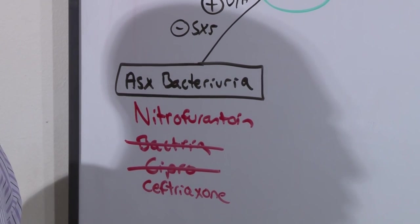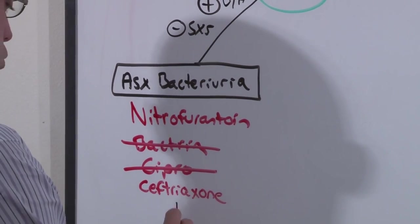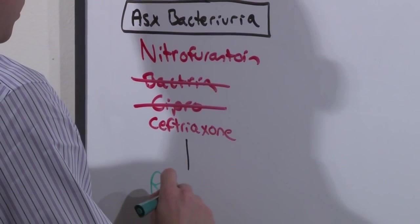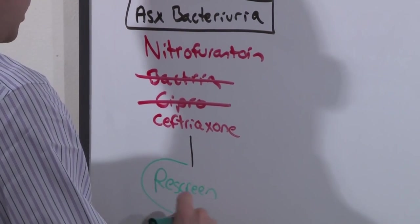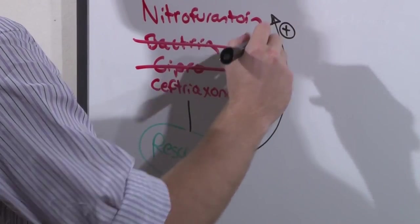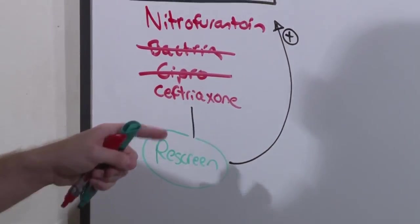In general, you are not going to test for resolution. But in pregnant patients, you are going to re-screen. And if on re-screen she is positive again, you're simply going to repeat the process with urinalysis and urine culture and treat her again.